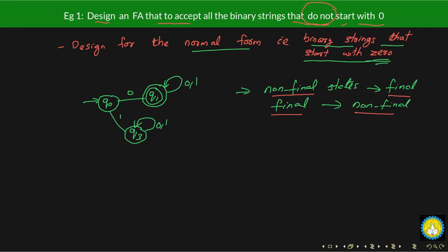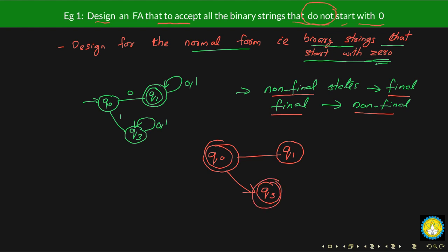Let's do this for this particular example. Q0 is not a final state here, so let's make it a final state. Q1 is a final state here, so we are going to make it a non-final state. Q3 is not a final state, but we are going to make it a final state. The transitions remain the same: zero here, one here, zero-comma-one on the self-loops. Q0 remains the starting state.